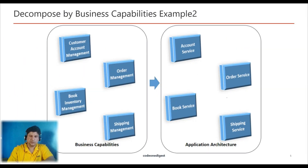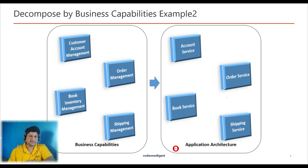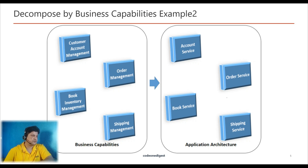Whenever you want to break a monolithic application into microservices, use this pattern to understand the business capabilities and business model so that you can create services accordingly. In this example, we have business capabilities like customer account management, order management, book inventory management, and shipping management — and we have created microservices on those business capabilities: account service, order service, book service, and shipping service.